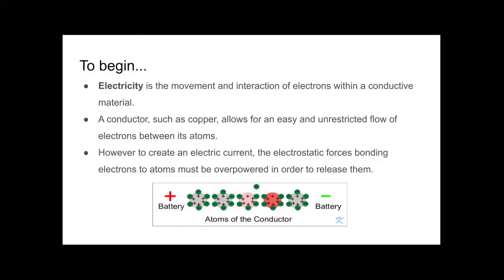But first, let us refresh our understanding. To begin, electricity is the movement and interaction of electrons within a conductive material. A conductor, such as copper, allows for an easy and unrestricted flow of electrons between its atoms.